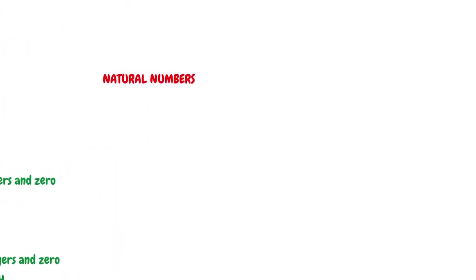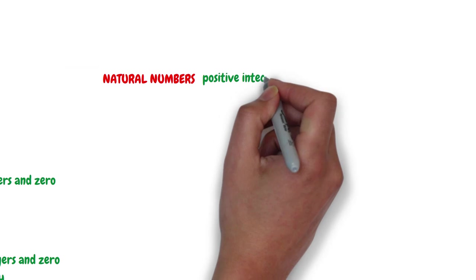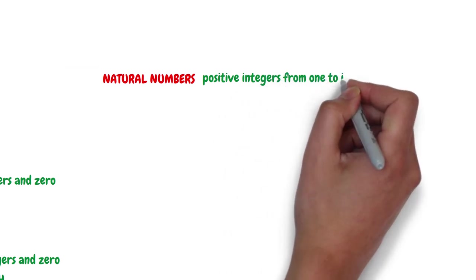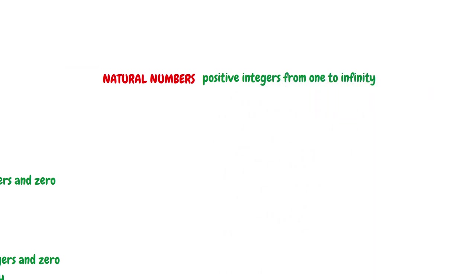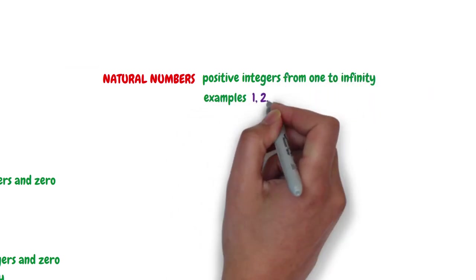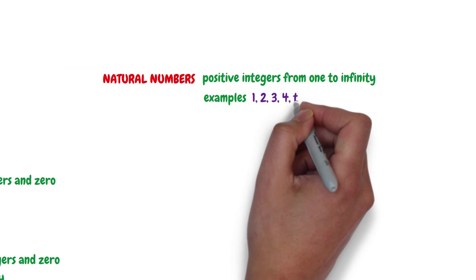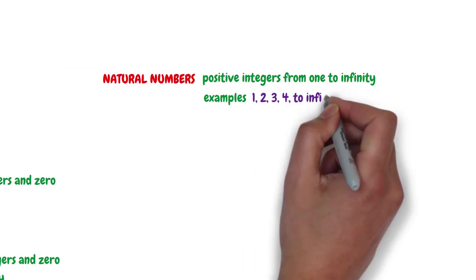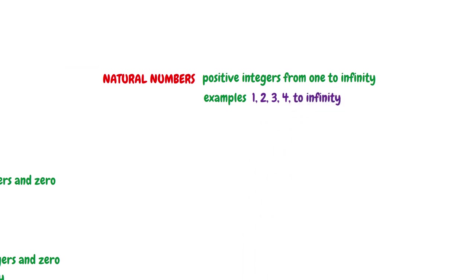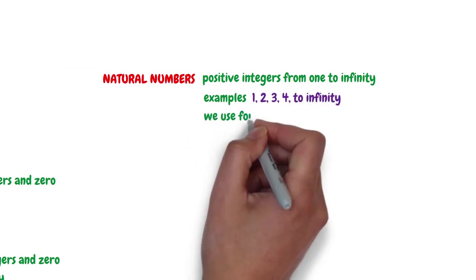The fourth set of numbers is the natural numbers. Natural numbers are positive integers from 1, 2, 3, 4, to infinity. Examples of natural numbers include 1, 2, 3, 4, to infinity. These are a set of numbers we use for counting.